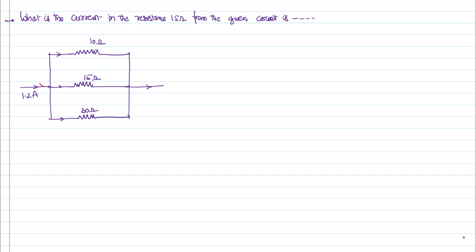It is given in the problem that there is a current of 1.2 ampere passing into this circuit. You can see these three resistors are in parallel. So being in parallel, the current will be distributed across them as different parts I1, I2 and I3.